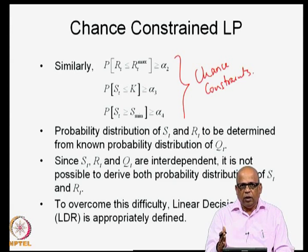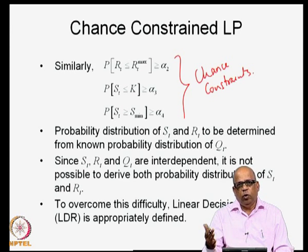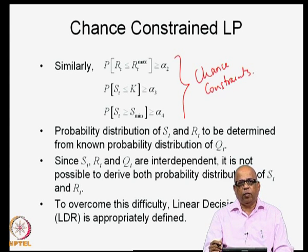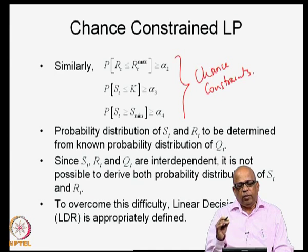Since S_t, R_t, and Q_t are interdependent, it is not possible to derive probability distributions of both S_t and R_t. To overcome this difficulty, we use what is called a linear decision rule (LDR). I must alert you that this is a slightly dated concept; we now have more rigorous and sophisticated ways of addressing chance constraints. However, as background, students must know how chance constraints are typically handled in a linear programming problem.